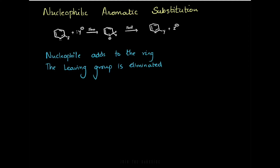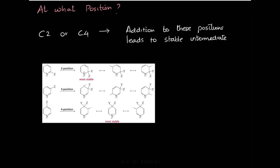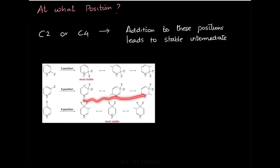This is the mechanism for nucleophilic aromatic substitution reaction of pyridine. Why at C2 and C4 position? When you look into the intermediates formed for the nucleophilic aromatic substitution reaction, at the two position and the four position you have three intermediates formed, one of which is more stable. At the three position, the intermediates are comparatively less stable, and therefore pyridine undergoes nucleophilic aromatic substitution at the two and four positions.